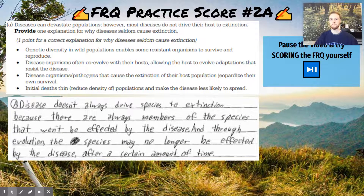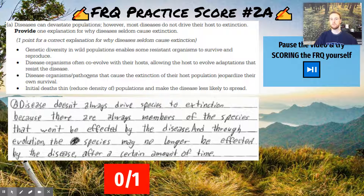We have a different prompt and a different answer here — pause the video and see if you can score this one. This is another great example of a student having the right idea but not having the right language to earn the point. This is a zero out of one. Looking at the scoring guide, they were attempting to earn the point that because of genetic diversity, some individuals are naturally resistant and will survive — but they did not use the phrase 'genetic diversity,' and they didn't really address survival and reproduction.